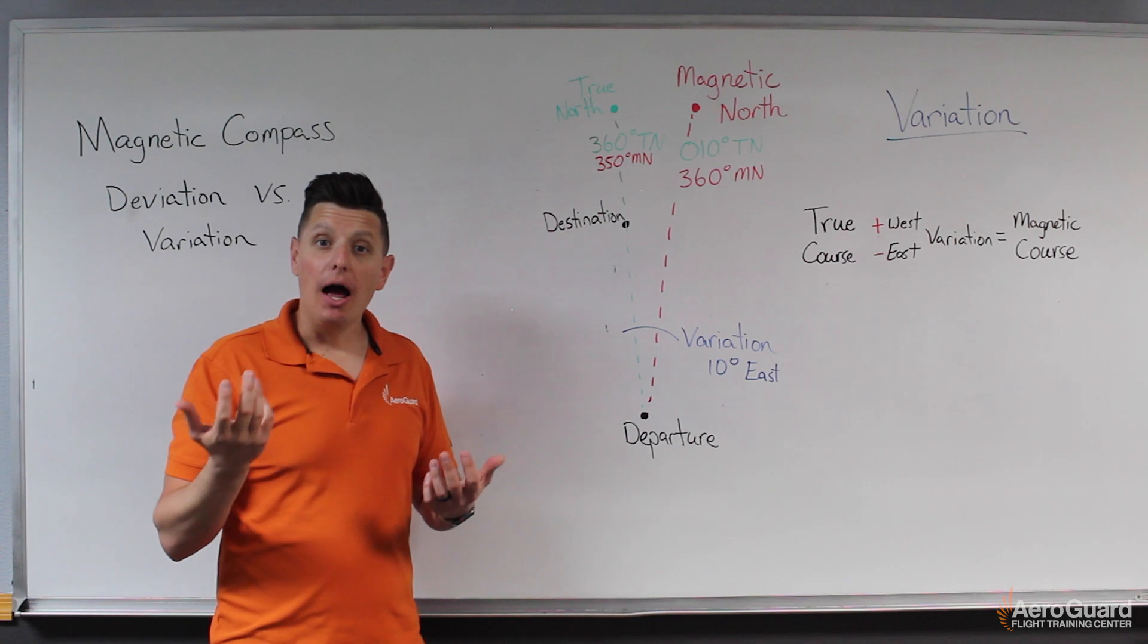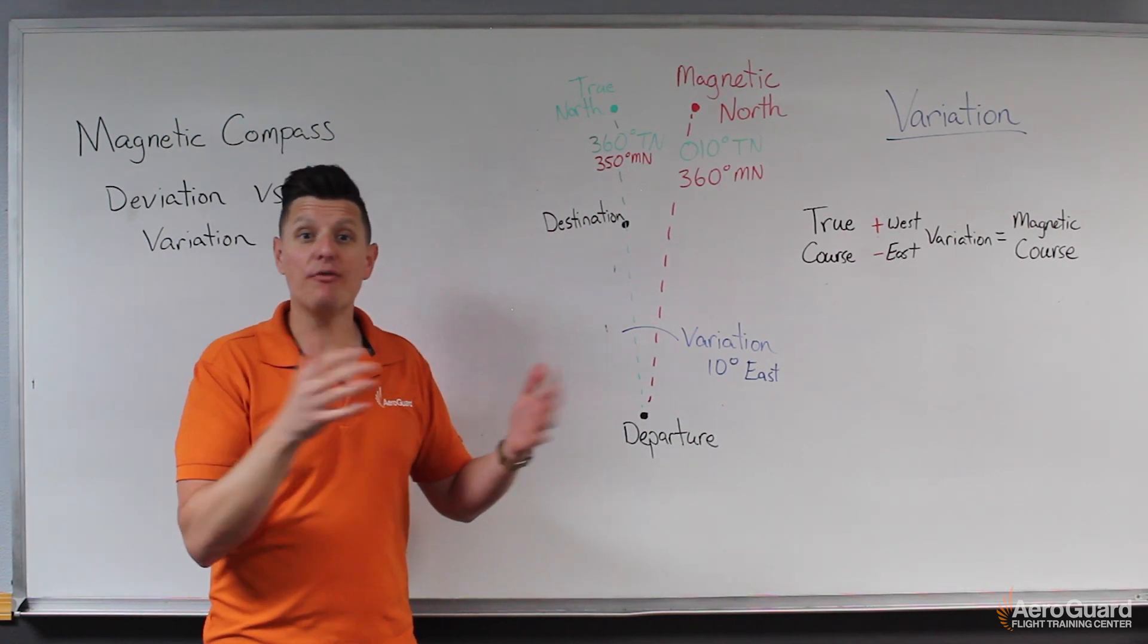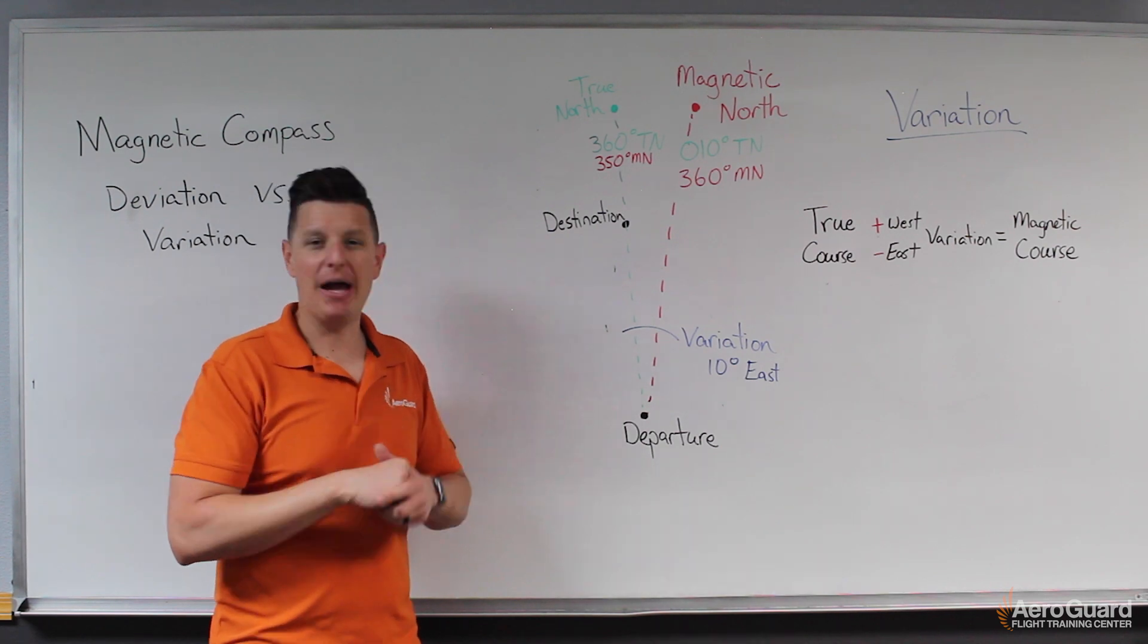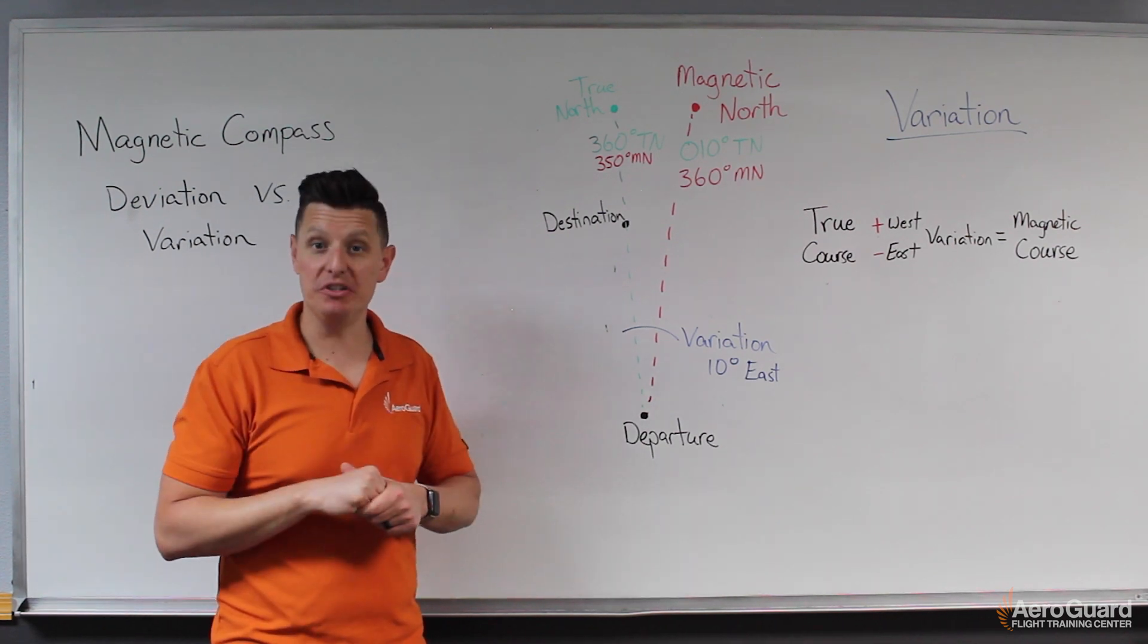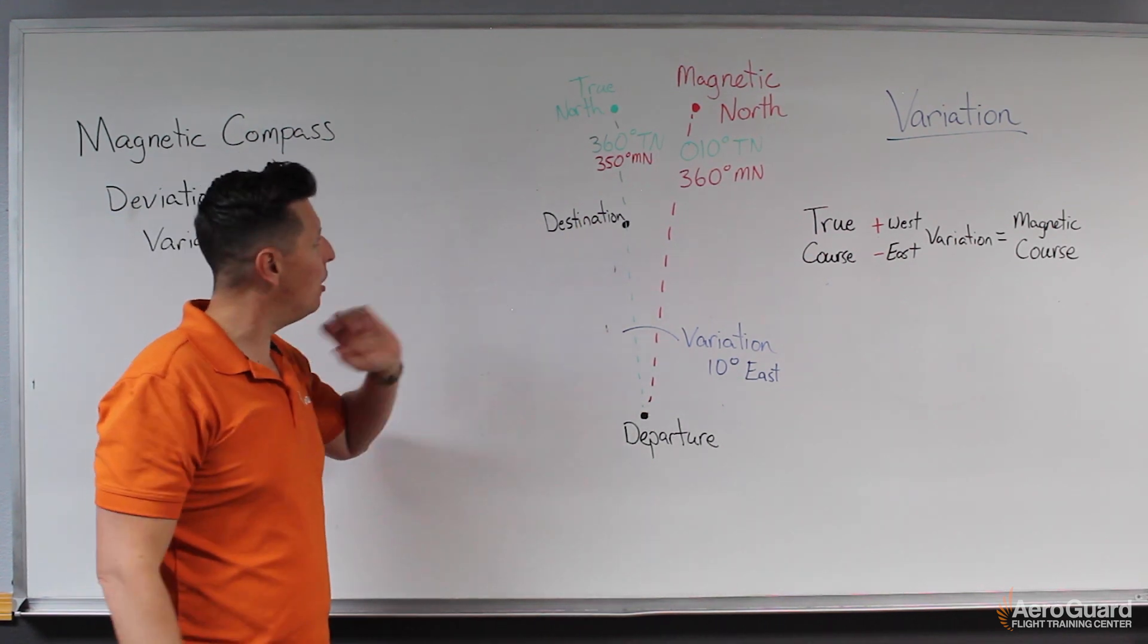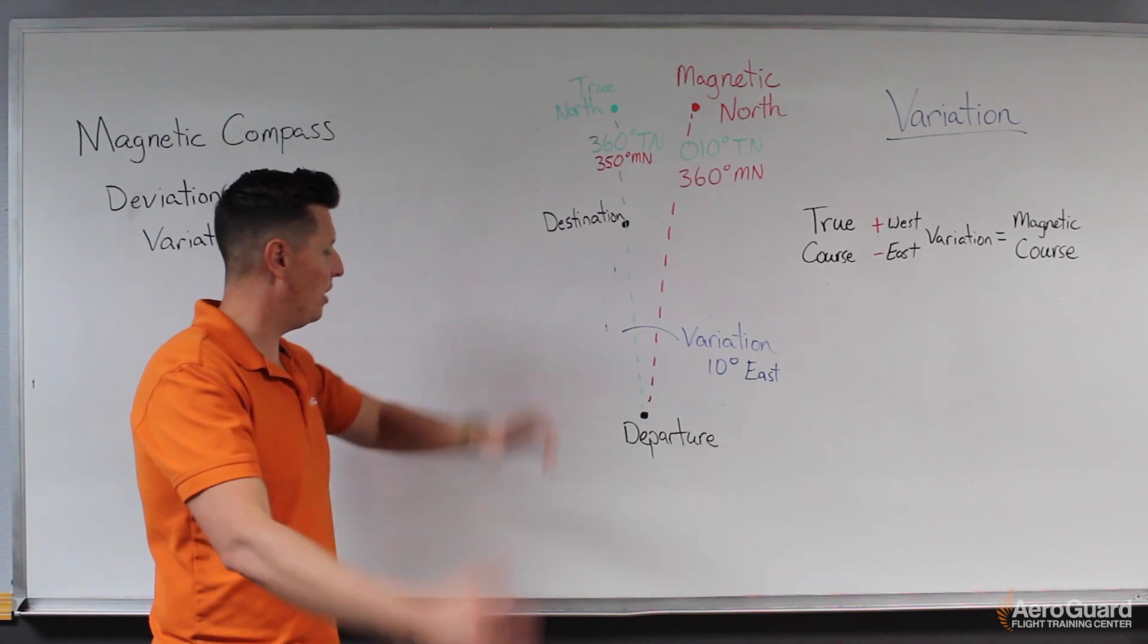So we get an idea then that wherever we were in the world, we could actually look at both true north and magnetic north, and they're kind of in different positions. So on the board here, I kind of have an example of how that would work in action.